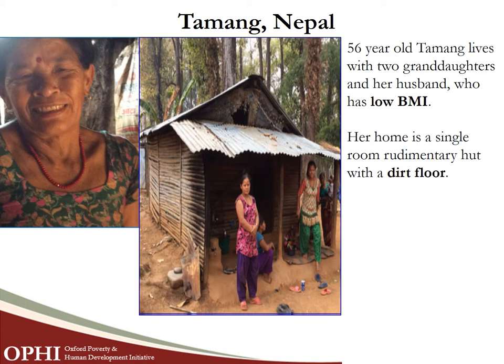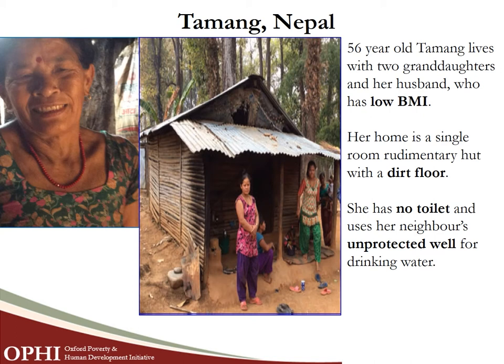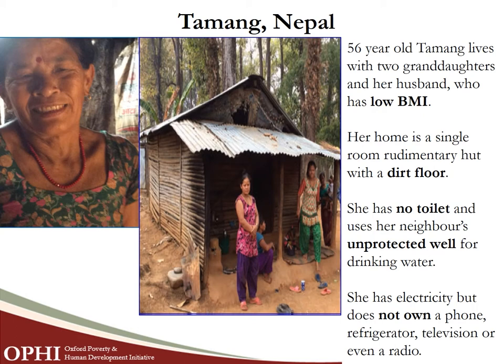Tamang collects wood from the nearby jungle, carries it on her back to market, and any income from selling wood allows her to buy rice and vegetables for a day's meals. The same wood is used to cook at home, so the family is deprived in cooking fuel. They live in a rudimentary hut with a dirt floor and walls of rudimentary materials — deprived in housing. They have no toilet and use a neighbor's unprotected well for drinking water — deprived in sanitation and drinking water.